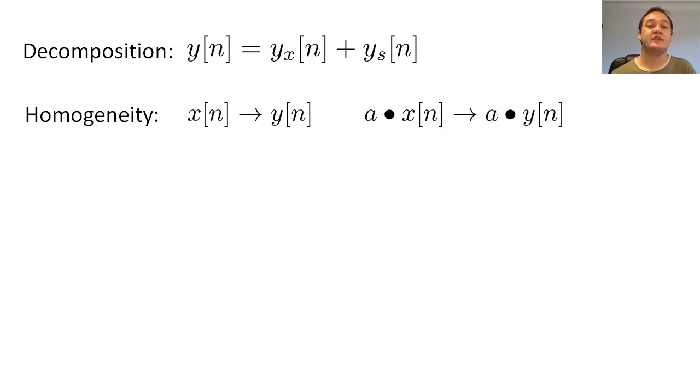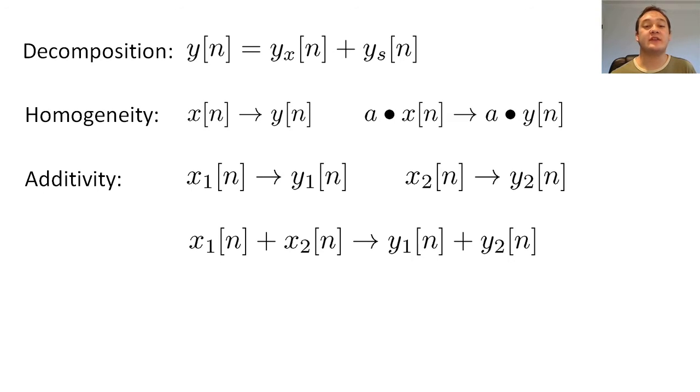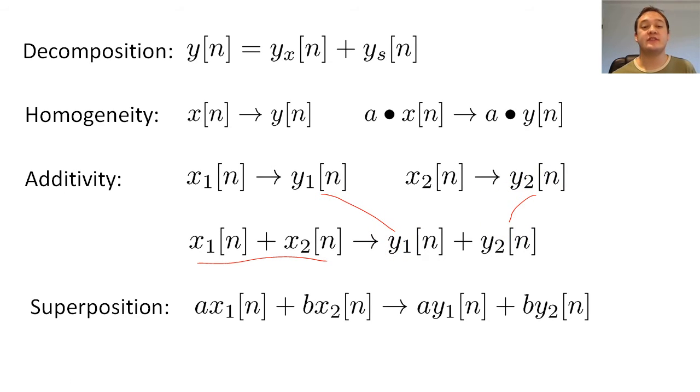The homogeneity property tells us that if we multiply x of n by a scalar, then we will scale y of n by that same scalar. The additivity property tells us that if we add two input signals together, then y of n should equal the sum of the system's response to each input separately. The superposition property tells us that the homogeneity property and additivity property can be combined. A system is said to be zero state linear if the superposition property is true for this system when the delay registers all equal zero.